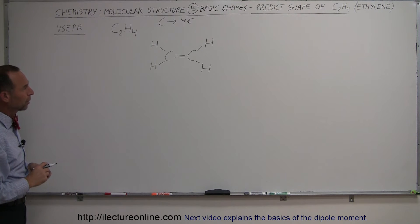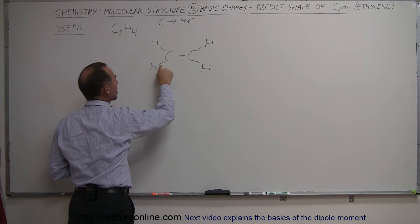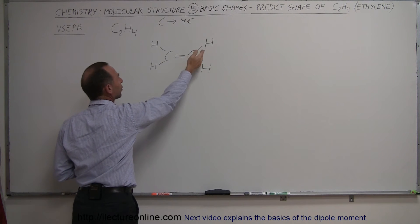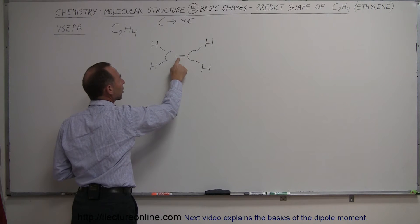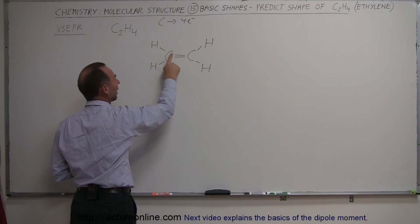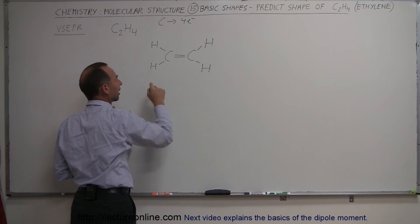Now how is that molecule going to look in a physical shape? The electrons here and electrons here in the bonds formed between hydrogen and carbon are going to be repelling the electrons here. They want to be as far away as possible from these two sets of electrons, and they want to be as far away as possible from those electrons.